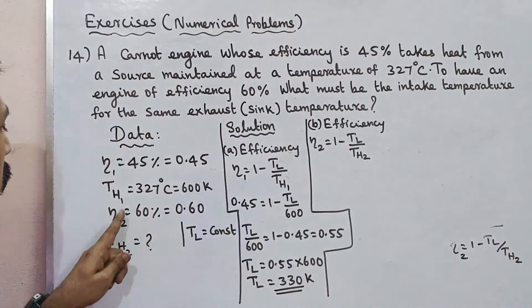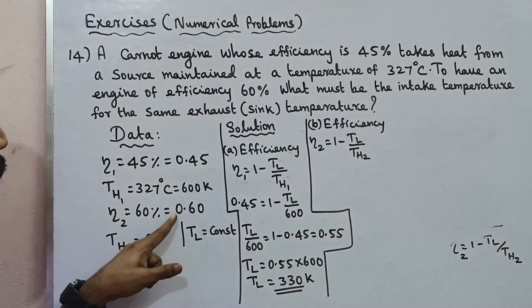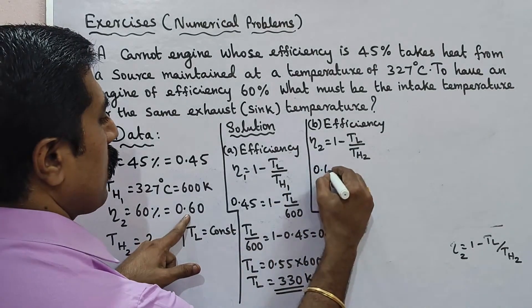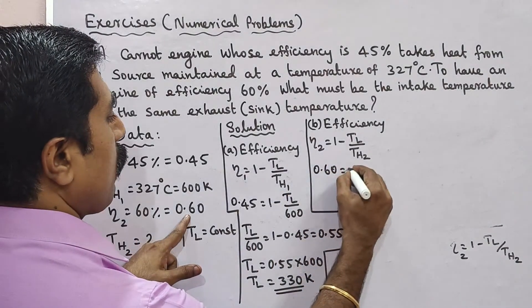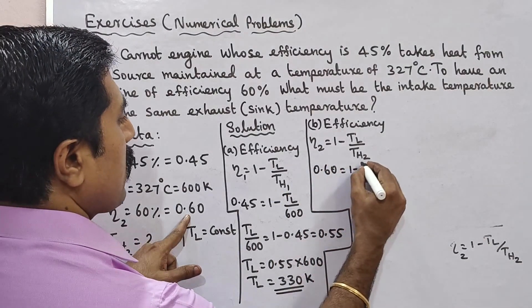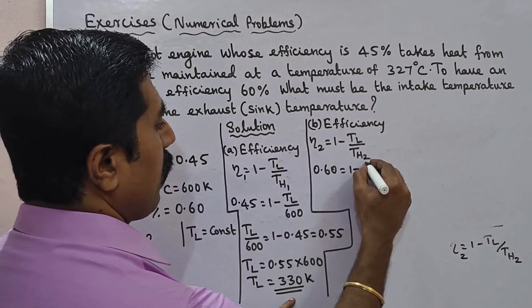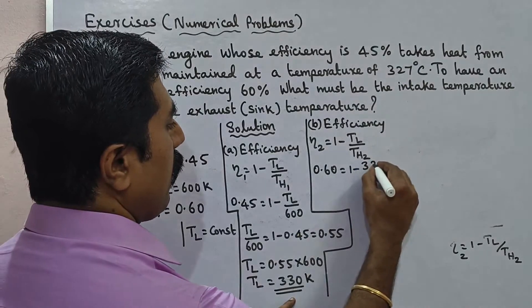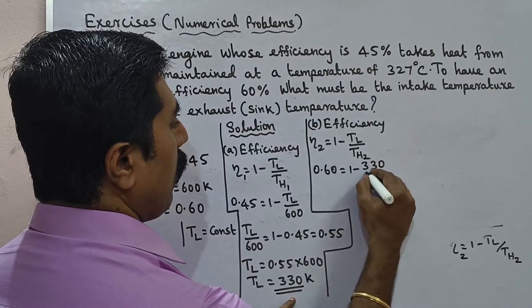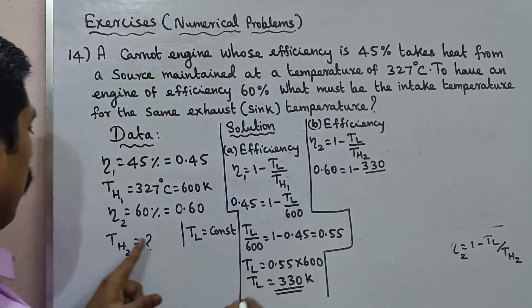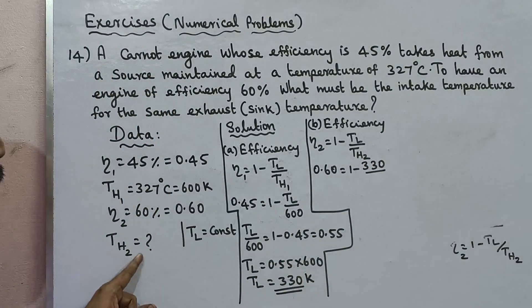Substituting eta₂ equals 0.60 and TL equals 330: 0.60 equals 1 minus 330 divided by TH2.